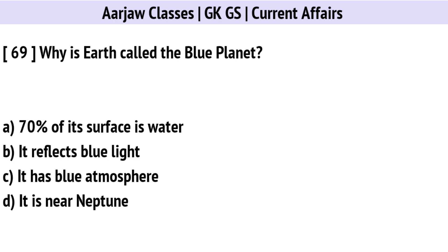Why is Earth called the blue planet? Correct option is A: Because 70% of its surface is water.